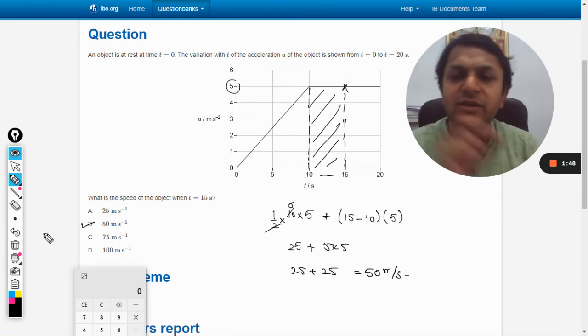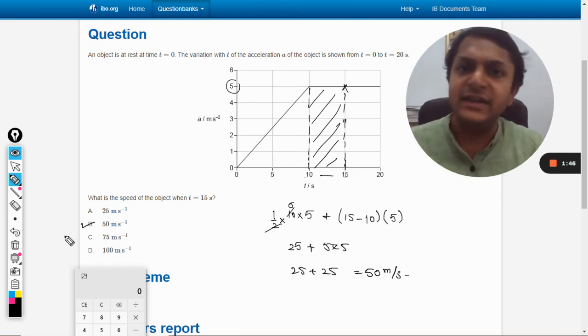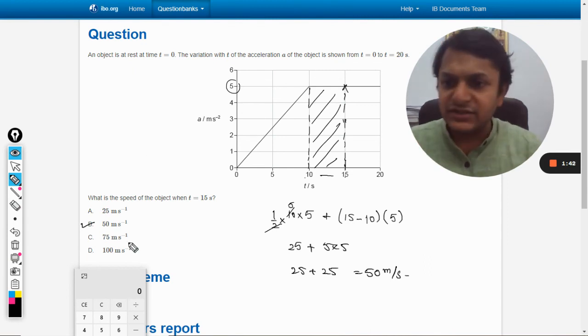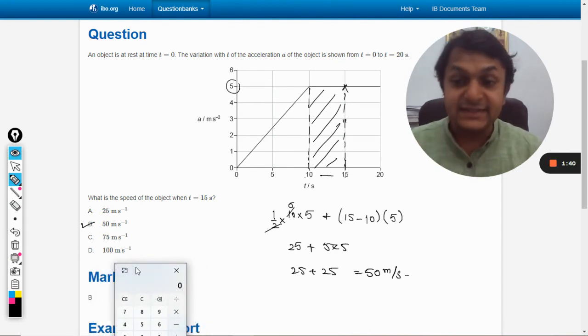So accordingly, B will be the answer. A, C and D are the wrong answers. Let us verify from a mark scheme. And yes, the answer is absolutely correct. It is B. So with this, all the best. Bye.